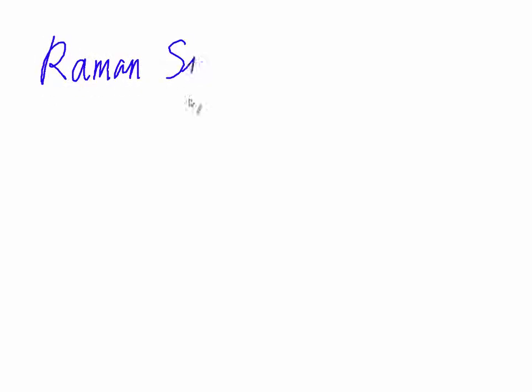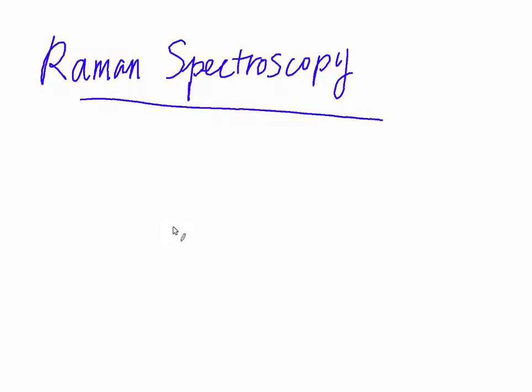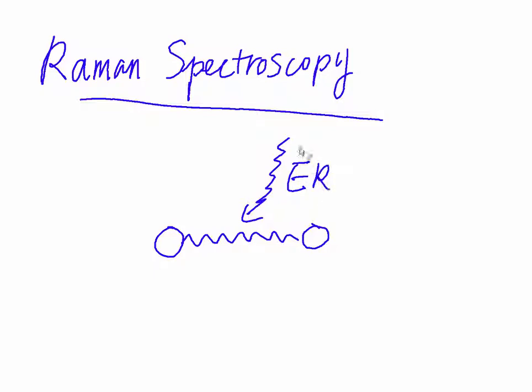In this lecture, we will talk about Raman spectroscopy. In the first lecture, we talked about Raman scattering — when electromagnetic radiation passes through a molecule, it causes scattering of the radiation. We can draw a simple vibrational level diagram.